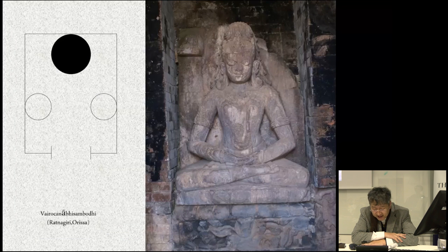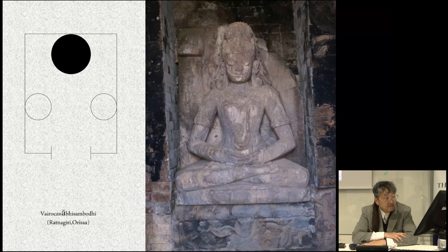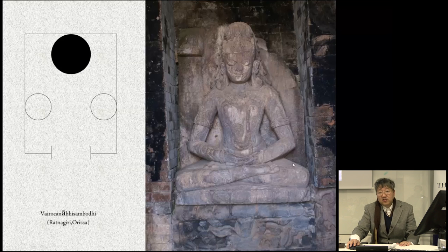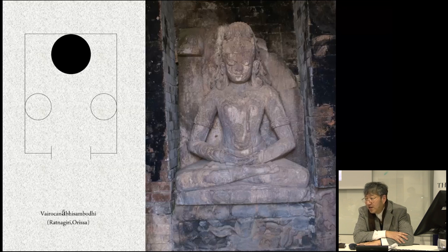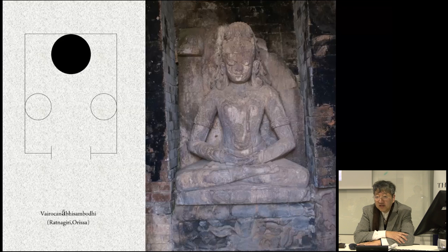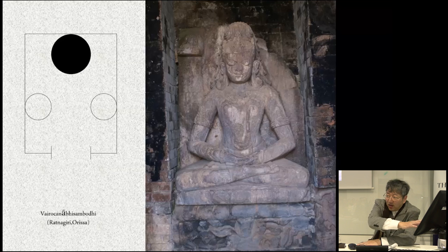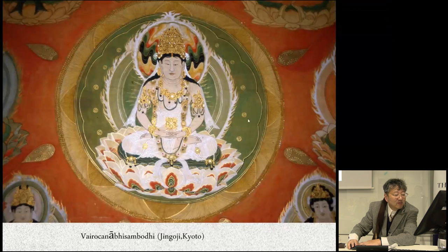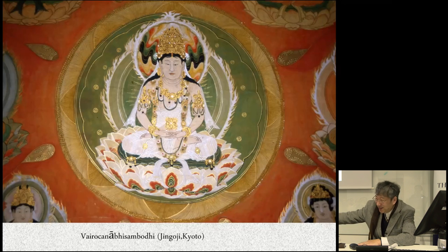Chapel number four at Ratnagiri, Orissa, faces east. The main deity, Vairocana Abhisambodhi in Sambhogakaya form, is enshrined at the front. This is the Vairocana Abhisambodhi image discovered at Ratnagiri, Orissa. Indian scholars identified this image as Manjushri, but Japanese scholars identified it as Vairocana Abhisambodhi, the main deity of the Garbha Mandala. The reason for this identification in Japan is explained in my book.